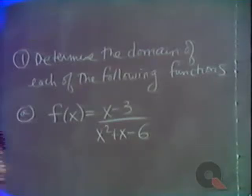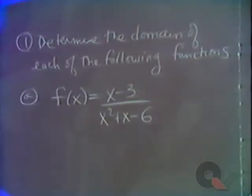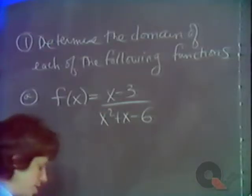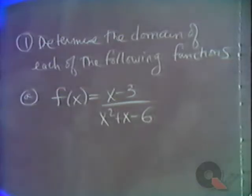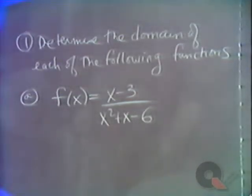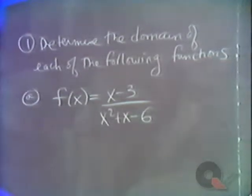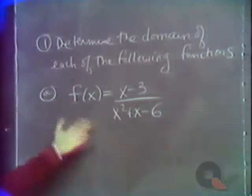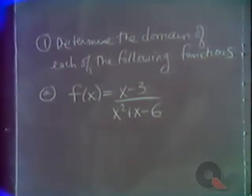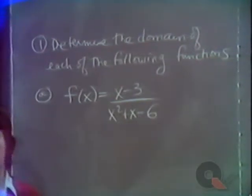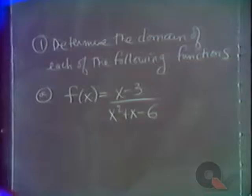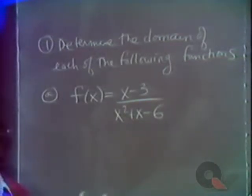Sometimes in a function, you have a domain explicitly given to you — it may say this function is only defined for all x values between 3 and 8, and then that's the domain of the function. Other times, you have to determine the domain yourself. If it's not explicitly stated, the domain is the set of all x values that you could substitute into the function and have it make sense. We don't want any division by zero and no square roots of negative numbers — no even roots of negative numbers.